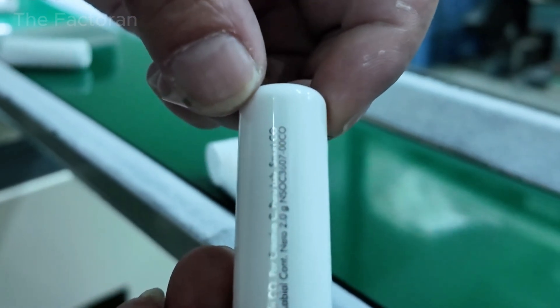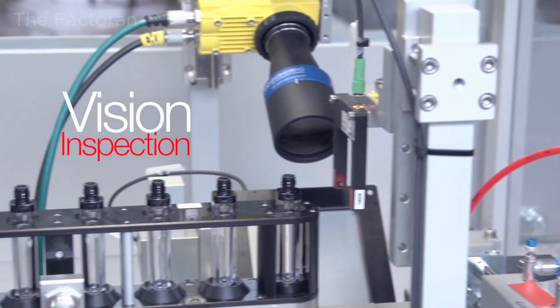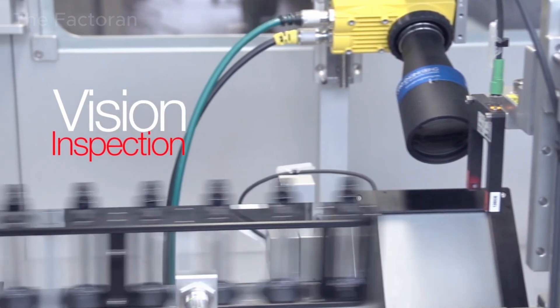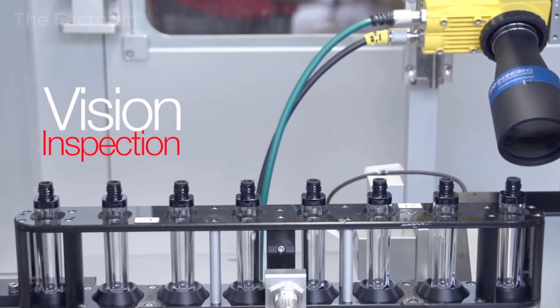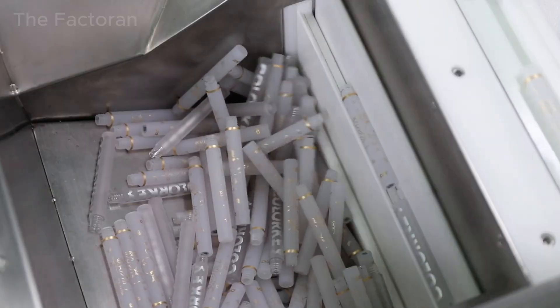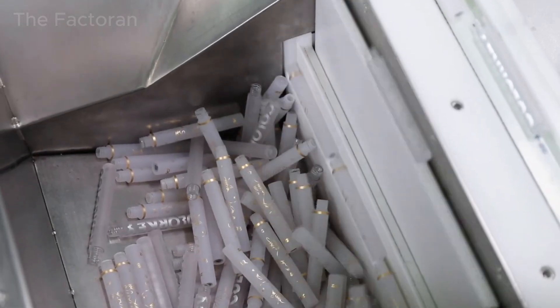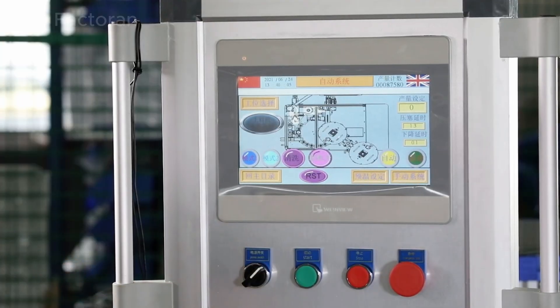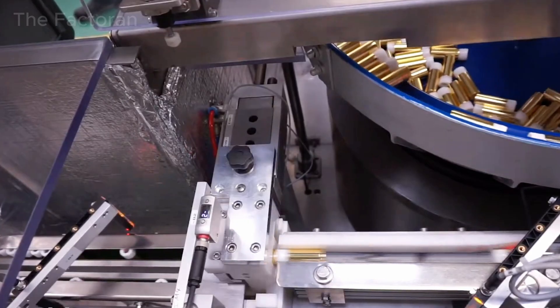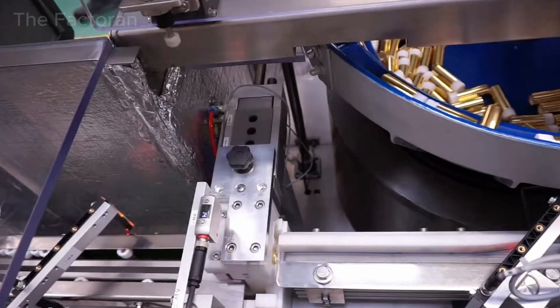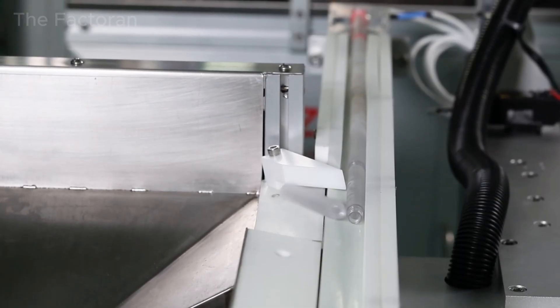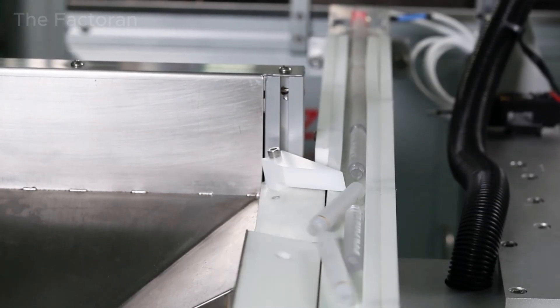Next, a vision inspection system uses industrial cameras to detect geometric defects such as cracked casings, misaligned threads, incorrect plastic coloration or microscopic deformations. Only lipstick cases that fully meet quality standards are allowed to proceed further along the production line. Any defective cases are immediately rejected by an automated eject system.